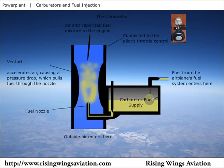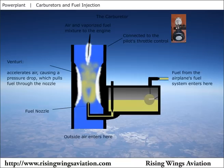Air is cooled inside the carburetor as a result of the reduced pressure and the vaporization of fuel. The temperature can drop from relatively warm temperatures prior to the venturi to below freezing just after it. Ice can form inside the carburetor, restricting the flow of air to the engine and reducing engine performance.